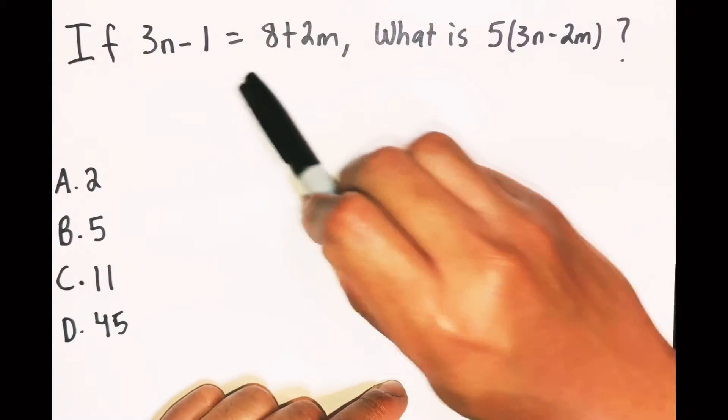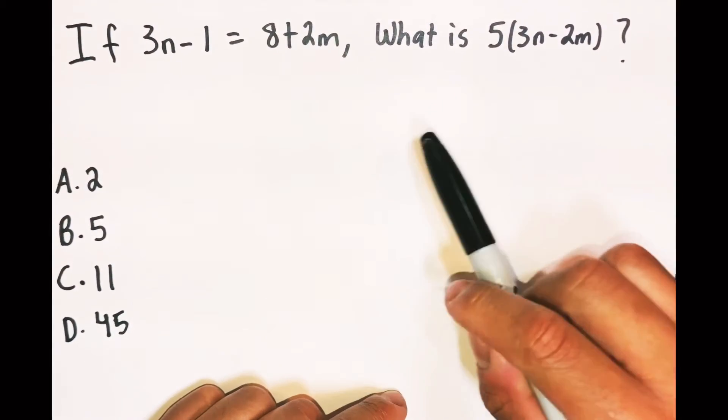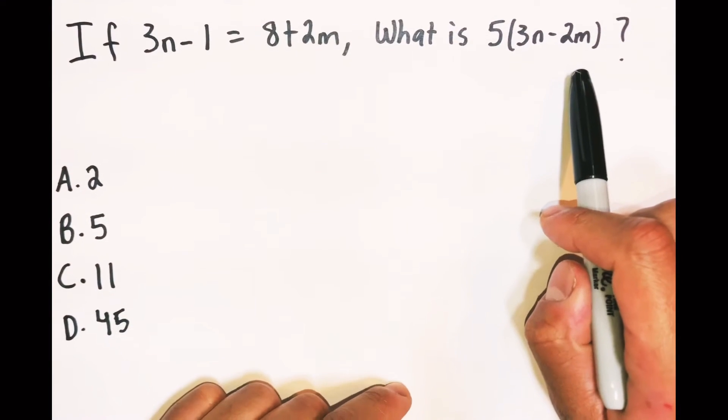Okay, if 3n minus 1 equals 8 plus 2m, what is 5 times 3n minus 2m?